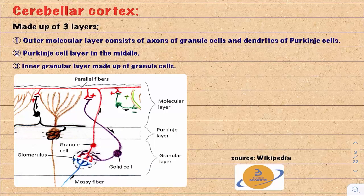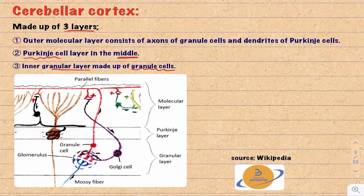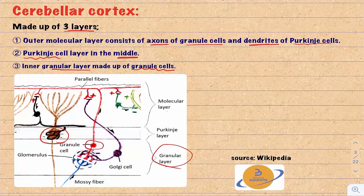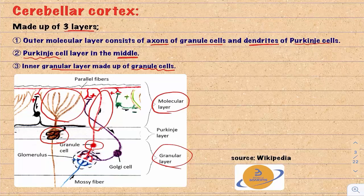The cerebellar cortex is made up of three layers. The inner layer is made of granule cells — the granular layer. The middle layer is composed of Purkinje cells — the Purkinje cell layer. The outer layer, called the molecular layer, is made of the axons of granule cells and the dendrites of Purkinje cells.